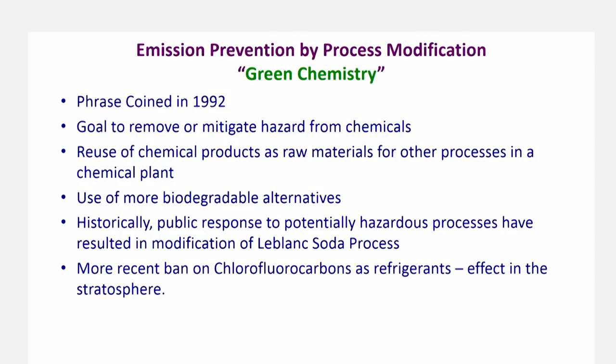The first methodology for emission control is prevention completely — which does not mean we stop the process, as that has consequences for economic and social aspects of sustainability. This is where sustainability takes an important connotation: as technologists we have a role to play in devising methodologies where we can still sustain the economics of society by looking at alternative ways of producing things. This is where the term green chemistry and green process come in — terms coined in the last few decades.